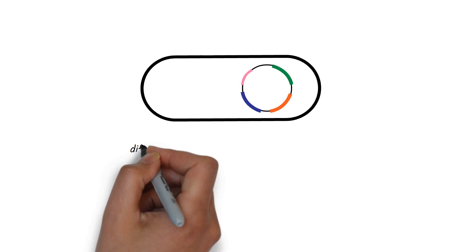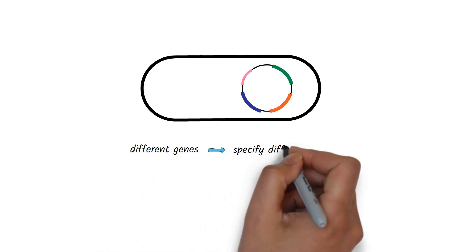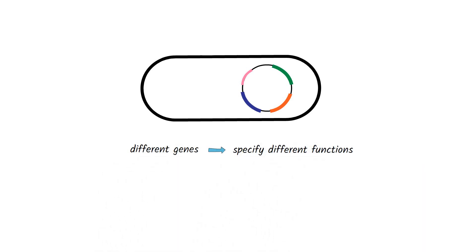Plasmids contain different genes that specify different functions. Based on their function, there are different types of plasmids.